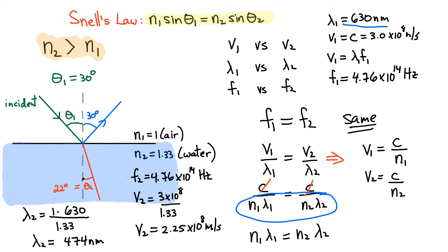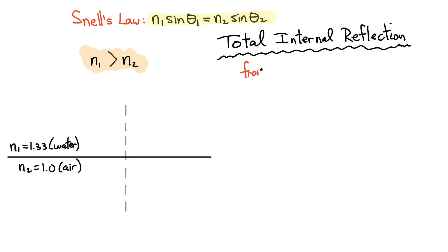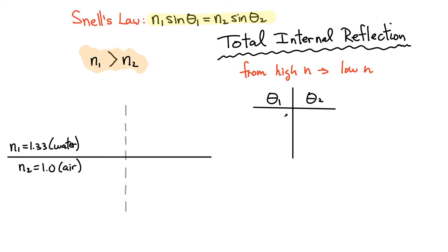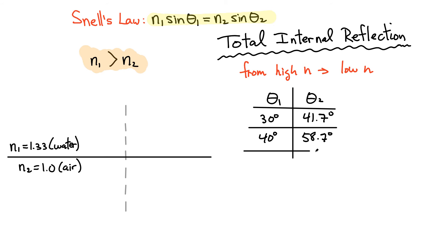There's something really important that happens when you go from a high index to a low index — like from water (1.33) to air (1). Let's make a chart of what happens for various incident angles. At theta 1 of 30 degrees, the refracted angle is 41.7 degrees. At 40 degrees, you get approximately 58.7 degrees. At 45 degrees, you get approximately 70 degrees. So the refracted angle is always bigger when going from high to low index.